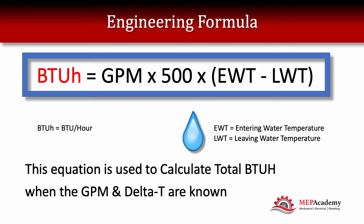I'm going to show you how to calculate the total BTUs of water. This can be used on anything where you can measure the flow and the Delta T. The formula is BTUs per hour equal your GPM — that's your flow of water — times 500, which is a constant, times your entering water temperature minus your leaving water temperature.